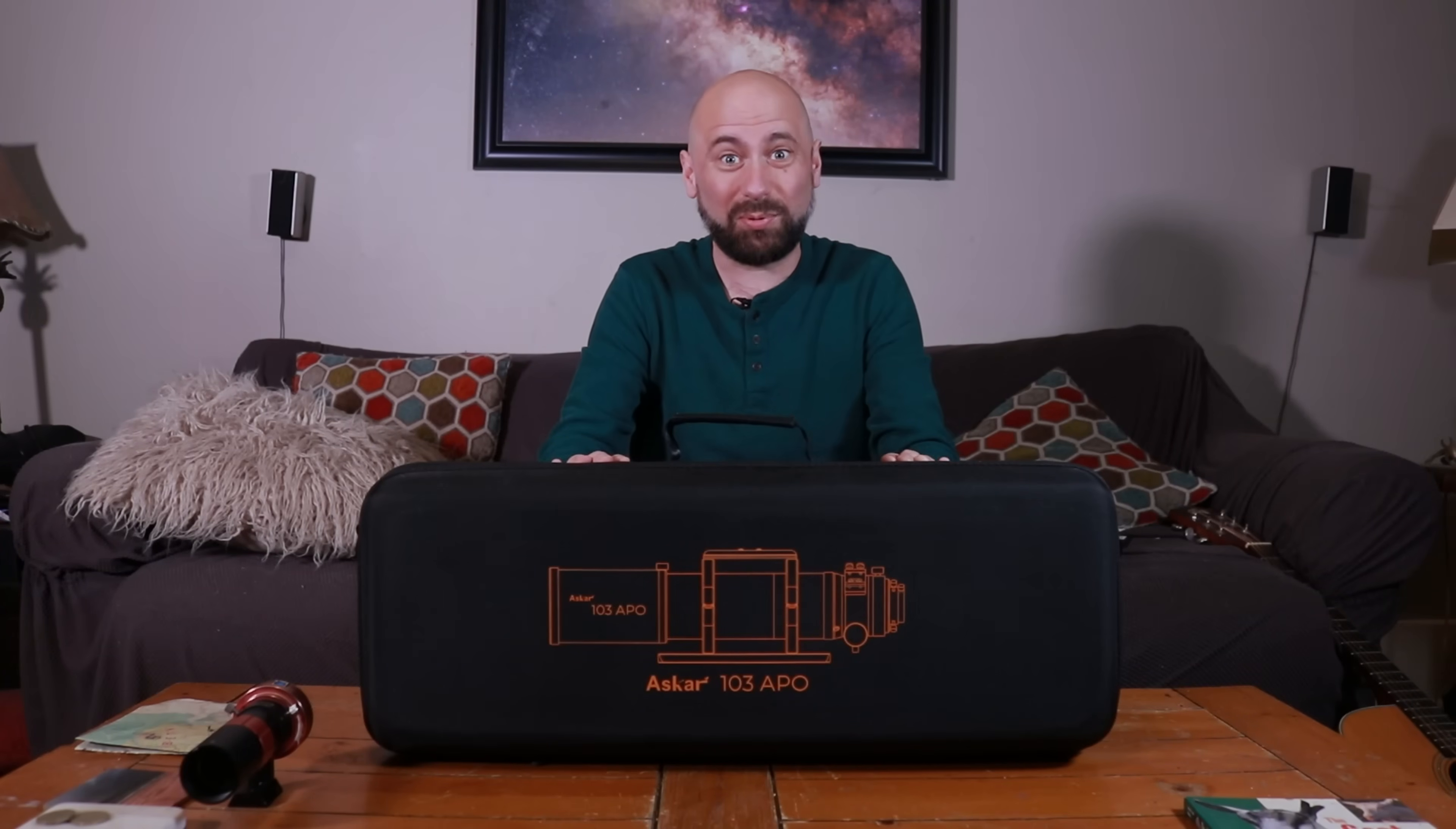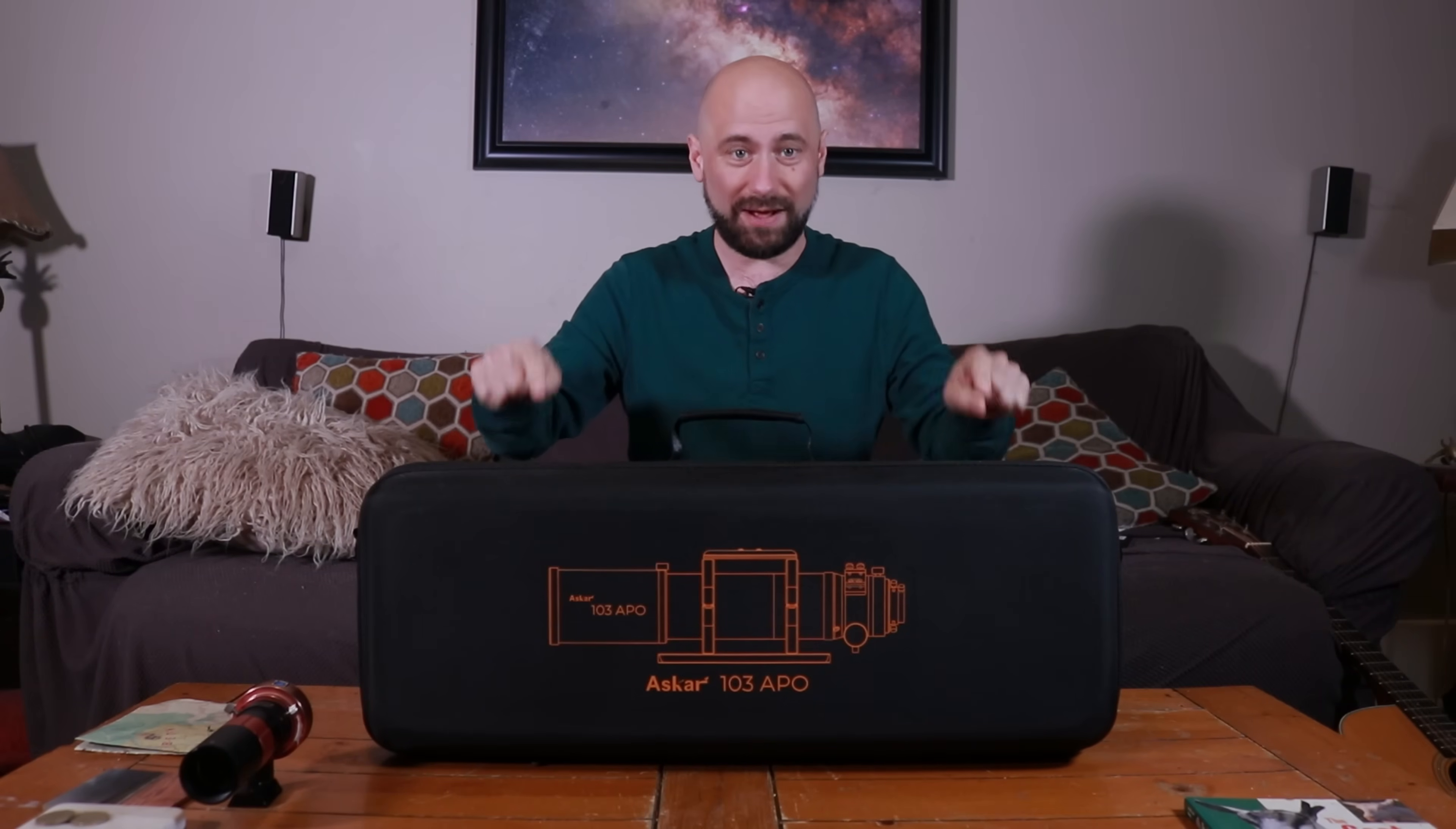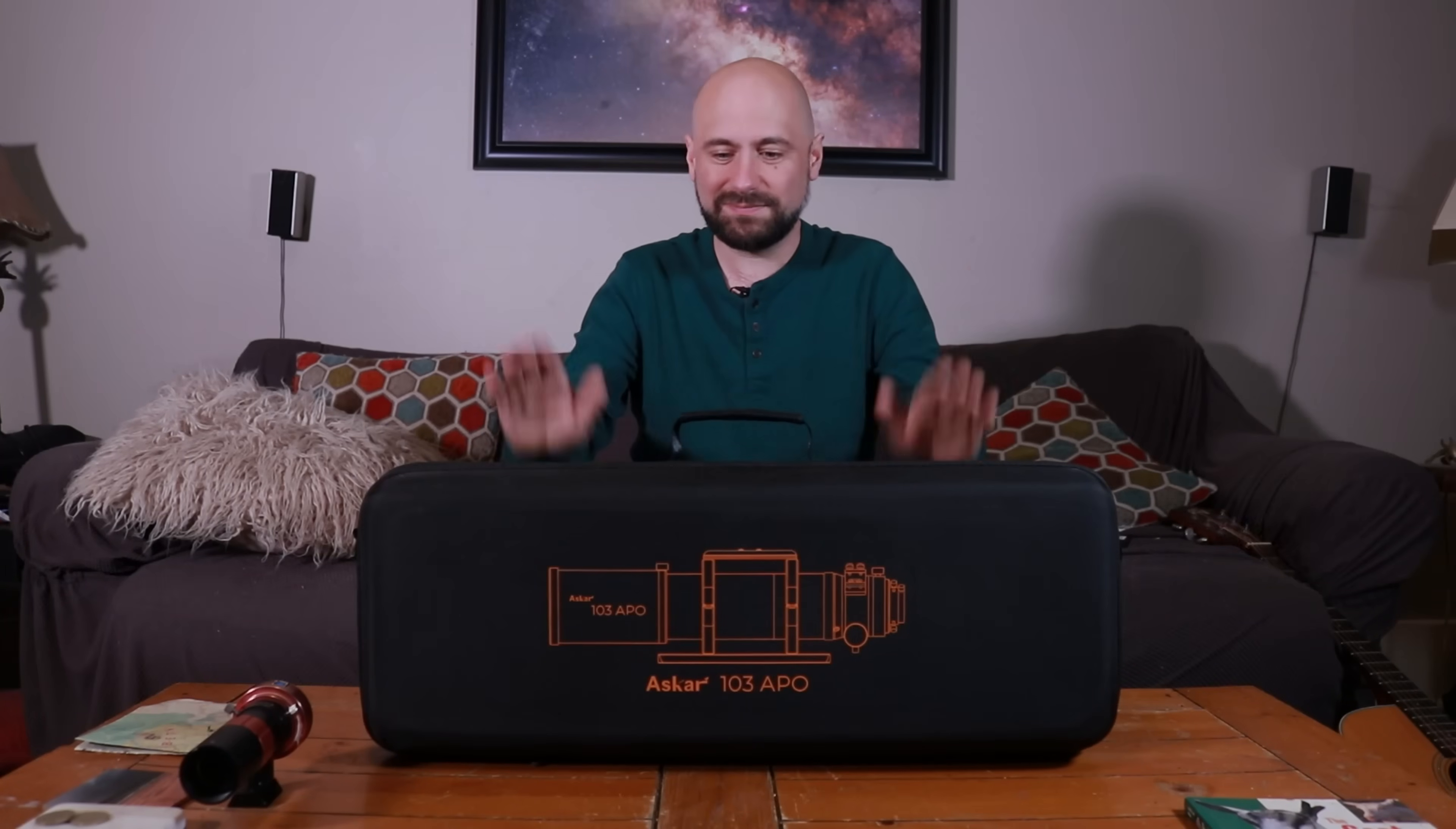One of the things I like surprisingly a lot about this telescope is this nice hard case it came with. I don't think I've ever gotten a telescope or lens that came with a case this tough and sturdy. And it has this nice handle on the top as well as a shoulder strap. I just want to travel with this thing. I really do. I think the only thing they could have done to improve it is put a few extra little slots in there for your flattener and reducers. But hey, I still like it.